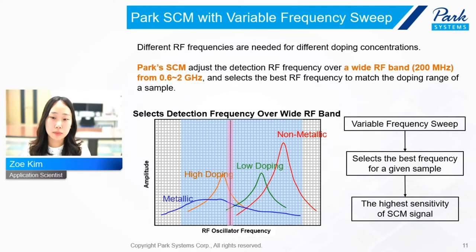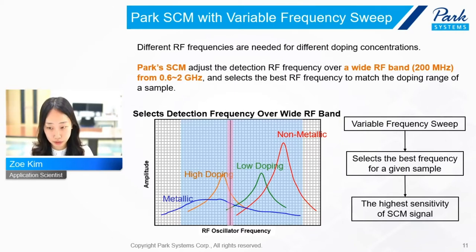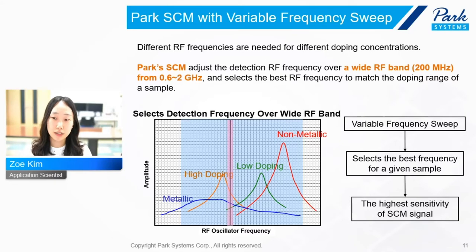By applying this serial resonator circuit to read the signal, the signal is amplified, and we can read a wide range of capacitance properties — from metallic materials to extremely low doping concentration levels. Overall, in the Park Systems SCM setup, we can get a signal from a variety of sample types with enhanced high signal-to-noise ratio.